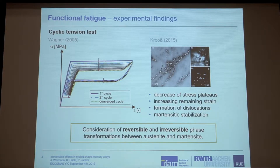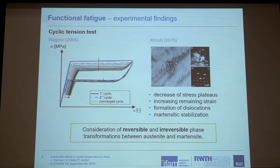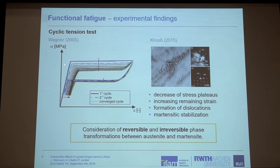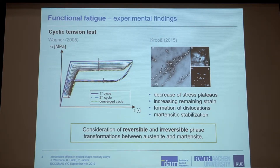Here you can see the effect of functional fatigue. We can see a classical hysteresis curve for a cyclic tension test by Wagner in 2003. The main material behavior is given by these transformations as mentioned before. We have this first plateau: during loading we have a linear elastic relation between stress and strain, but then at a certain stress our transformation is initiated. Due to mechanical loading we have a transformation from the initially austenitic material to martensite. If we then unload, we again have linear behavior between strain and stress, until reaching the lower plateau where we have the back transformation to austenite. The problem is that if we cycle our material, we have this decrease of the plateau stresses.